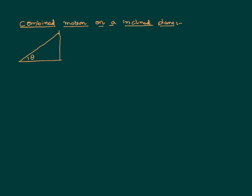Let the angle of inclination be theta, let the height of inclination be h, and the length of inclination equal to l. Generally in a real-time problem these three parameters may not all be given — only any two of them will be given. Let us assume a body like a ring or a disc on top of the inclined plane, whose mass is equal to m, radius is r, and it is initially in the state of rest.